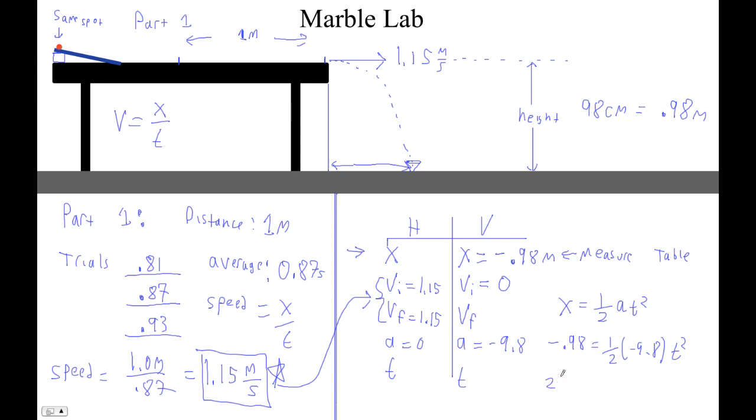So negative 0.98 is 1 half negative 9.8 times T squared. We'll find T. T will go across. And then this times T will give us this. All right. Here we go. Let's see. Let's solve this thing. So I'm going to go 2 times negative 0.98 over negative 9.8. That's going to be my T squared. So here we go. 2 times negative 0.98 divided by 9.8. This is, of course, going to be negative 9.8. This is, of course, 0.2. Equals T squared. So T is going to be the square root of this. So we'll take the square root of both sides.